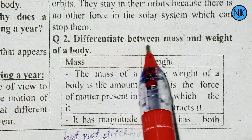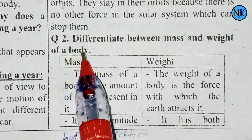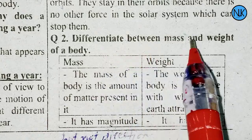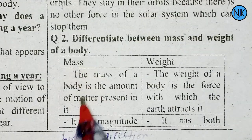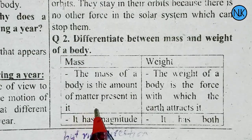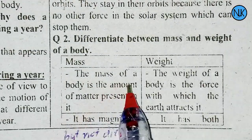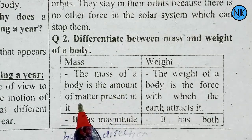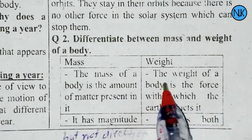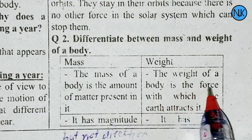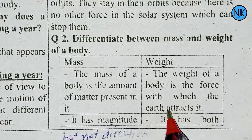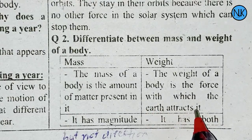Question number two: differentiate between the mass and weight of a body. The mass of a body is the amount of matter present in it. The weight of the body is the force with which the Earth attracts it.